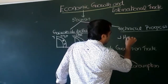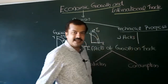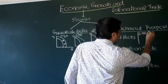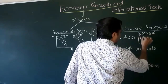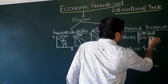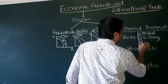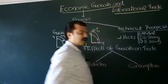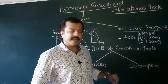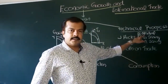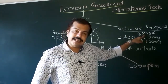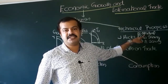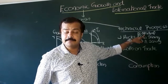We also know from basic microeconomics that Hicks has classified technical progress into three kinds: neutral technical progress, labor-saving technical progress, and capital-saving technical progress. Neutral technical progress means that as a result of it, the productivity of both capital and labor increases in the same proportion.